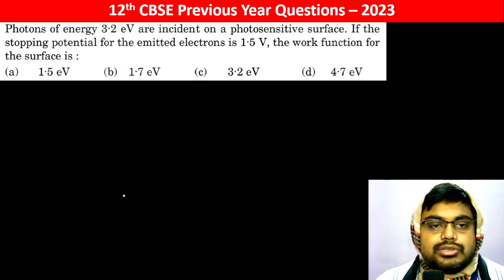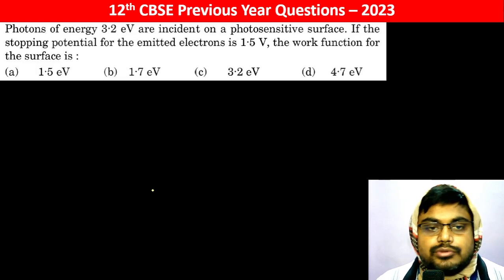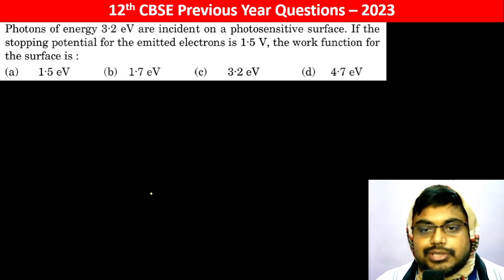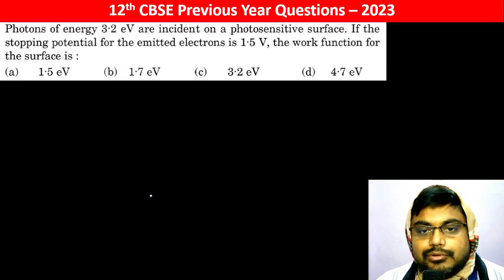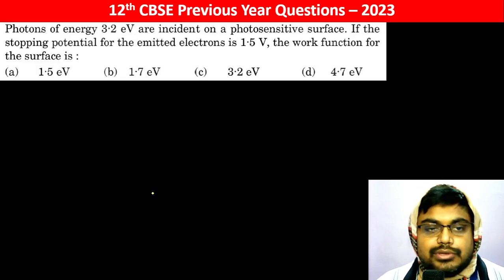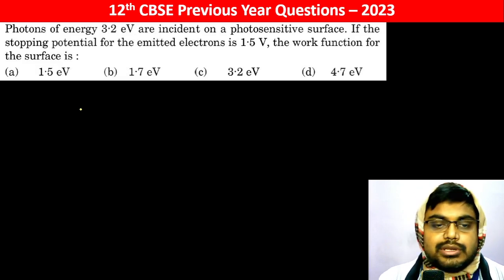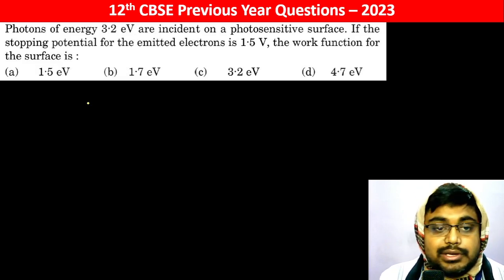Photons of energy 3.2 electron volt are incident on a photosensitive surface and the stopping potential for the emitted electrons is 1.5 volt. Find the work function of the surface.